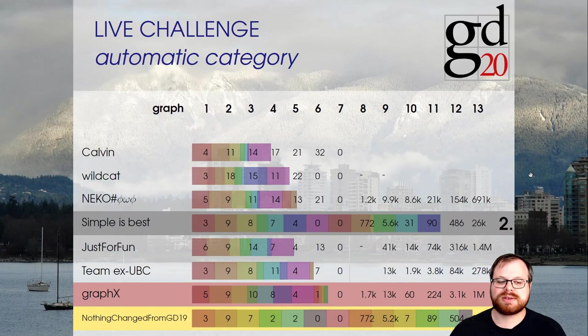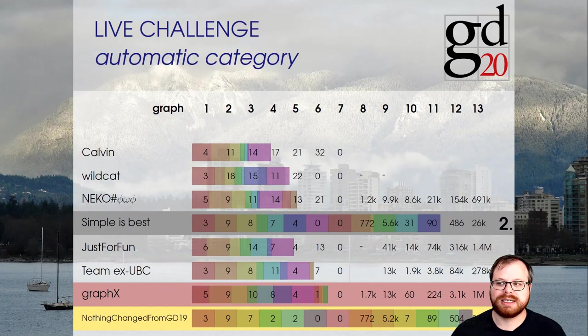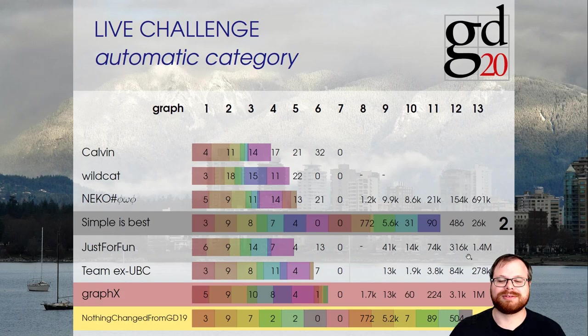The automatic category winners: in third place, Team Graph X, consisting of Luca Castelli-Aliardi and a bunch of his students. In second place, Team Simple as Best, consisting of Sebastian Benner and Dominic Durschnabel. And first place goes to Team Nothing Changed from GD19, consisting of Solvay Klepper, Axel Kukuk, Paul Palomero Bernardo, Maximilian Pfister, Patrizio Angelini, Michalis Bekos, Henry Förster, and Michael Kaufmann. Congratulations to these three teams for your very good algorithms.